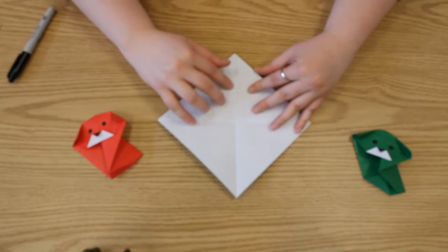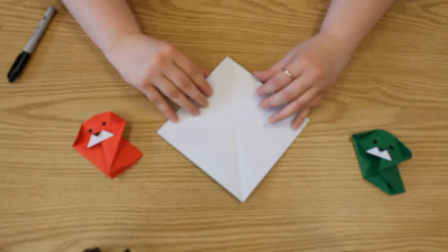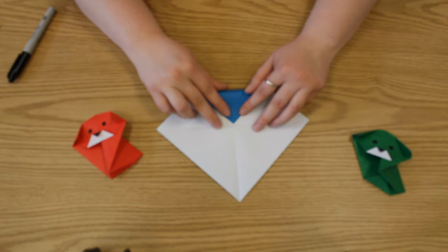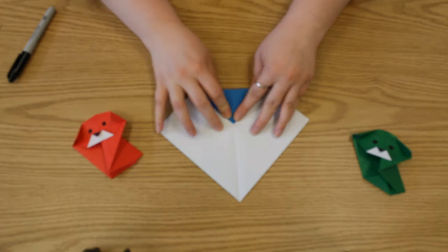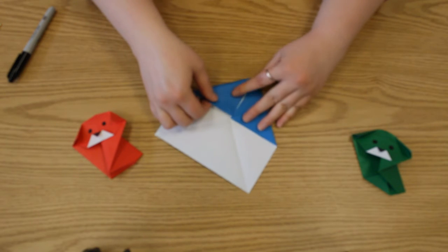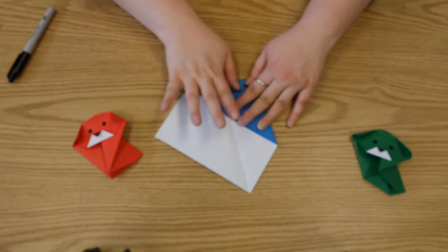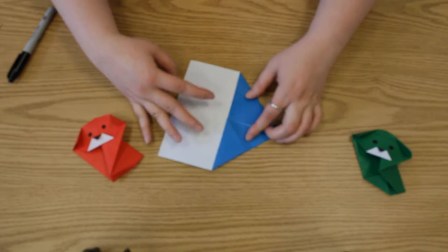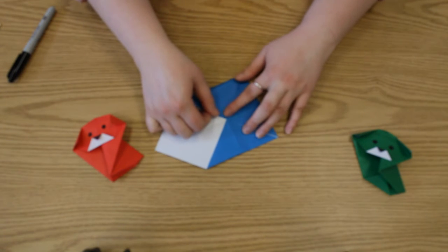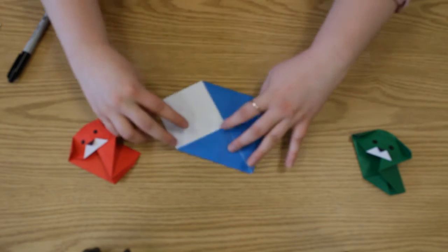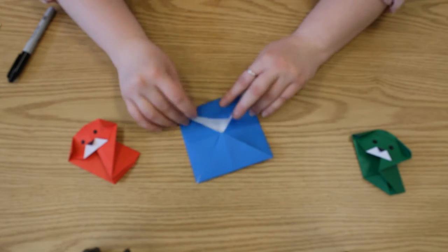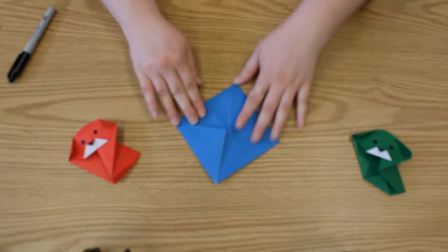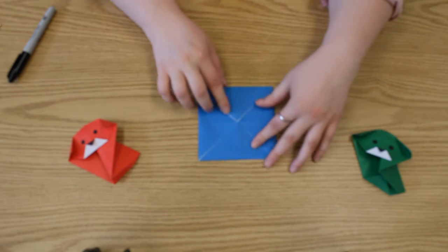So now we've got these two lines in the paper and we're going to take a corner, fold it in so the point meets the center where the two lines cross. We're going to fold down. We're going to do it again for each side. If you overlap or have a gap, that's fine, don't worry. So you're going to have a little blue square.